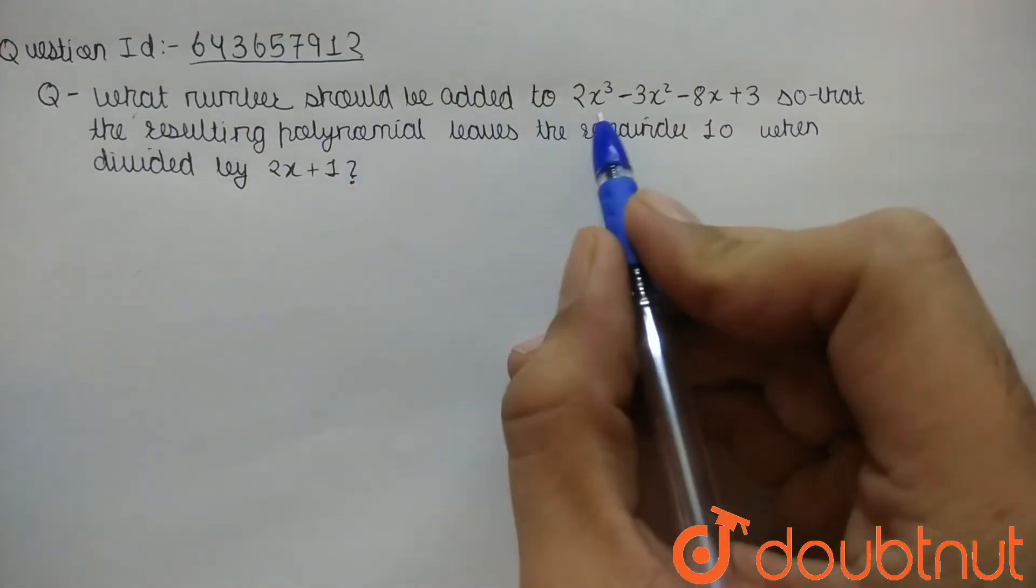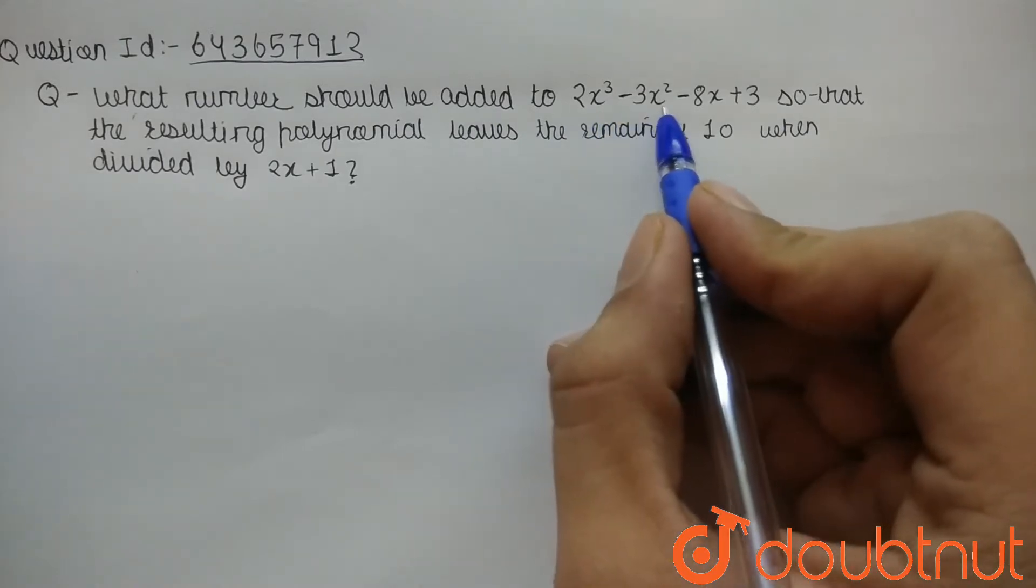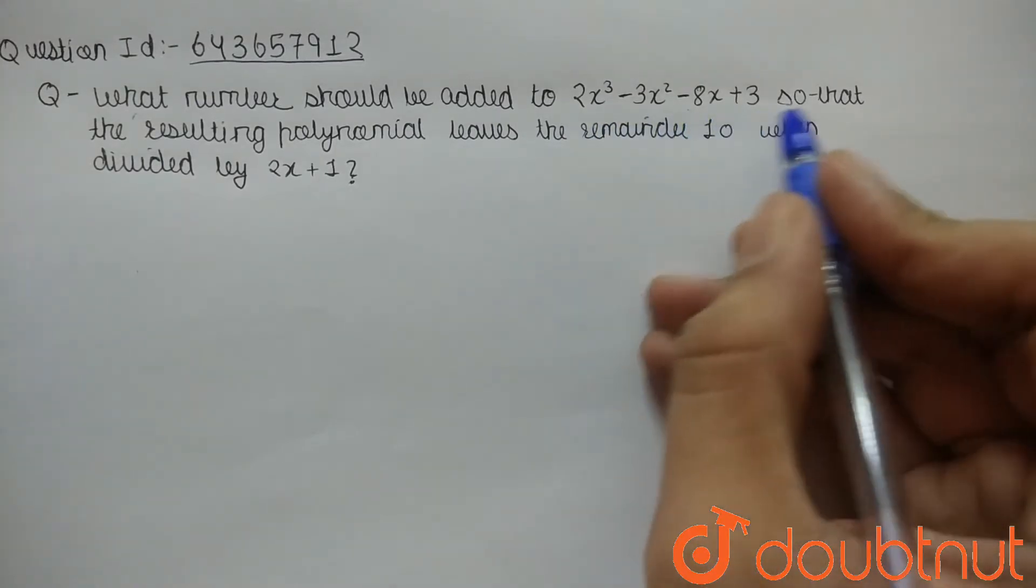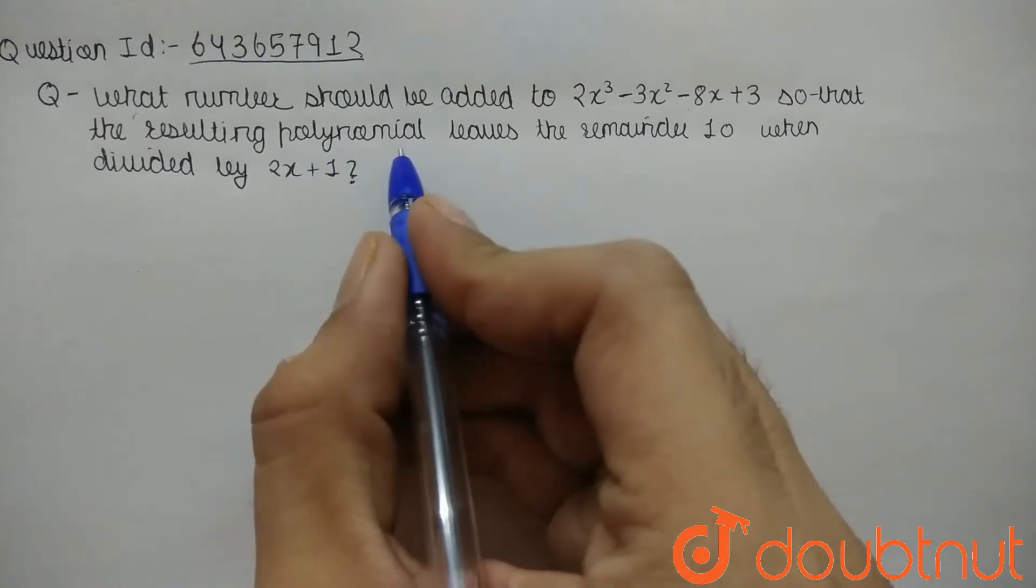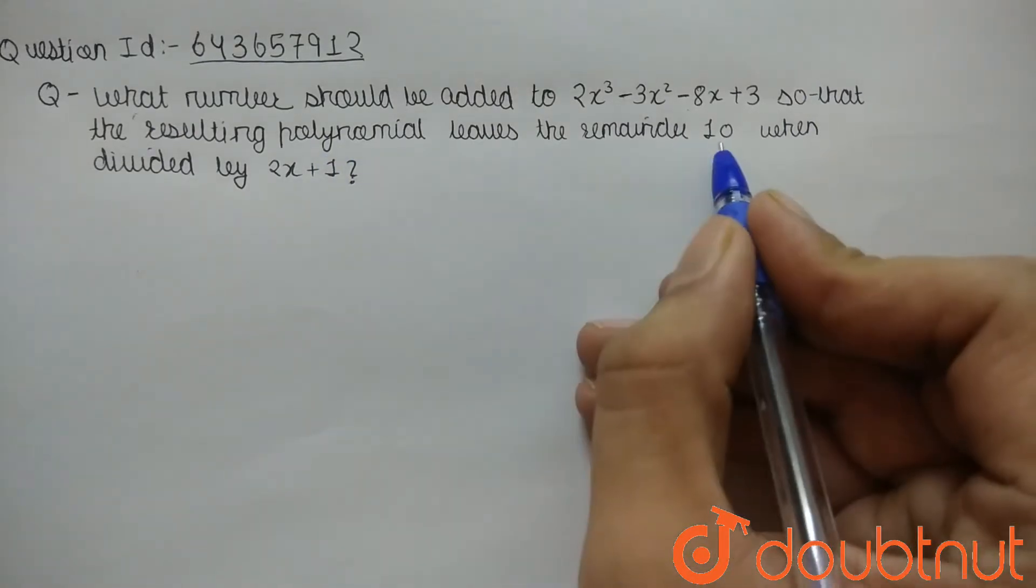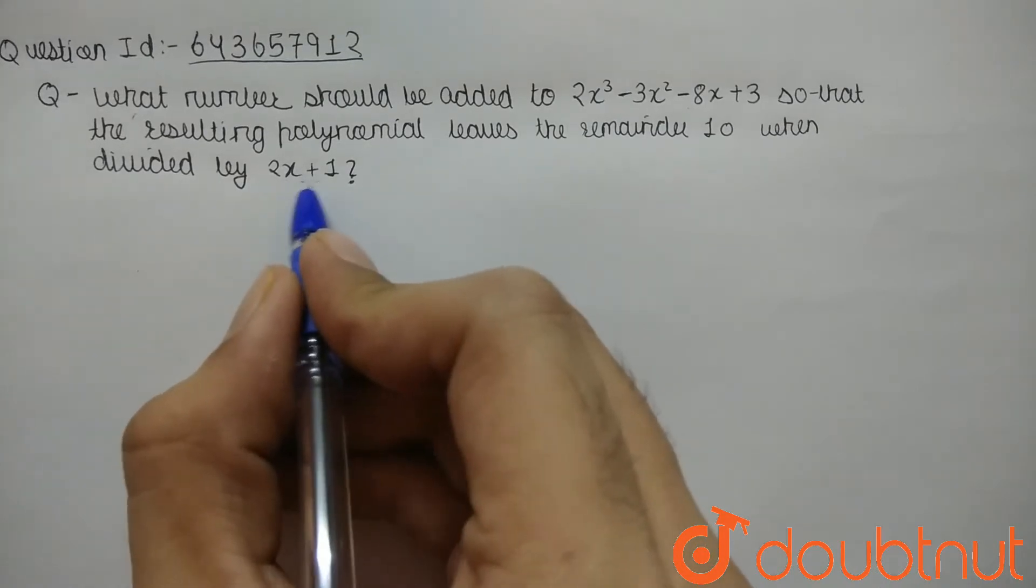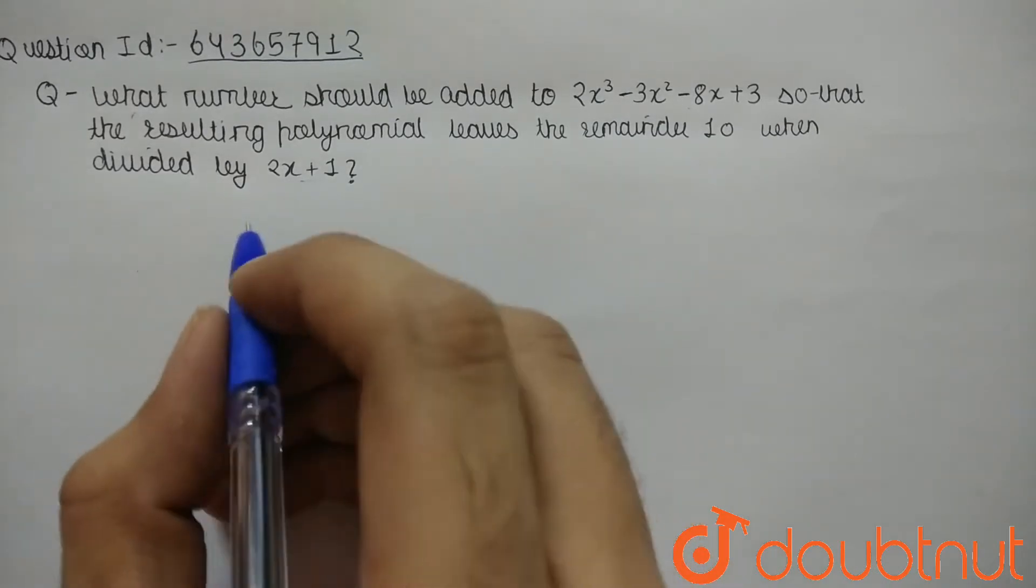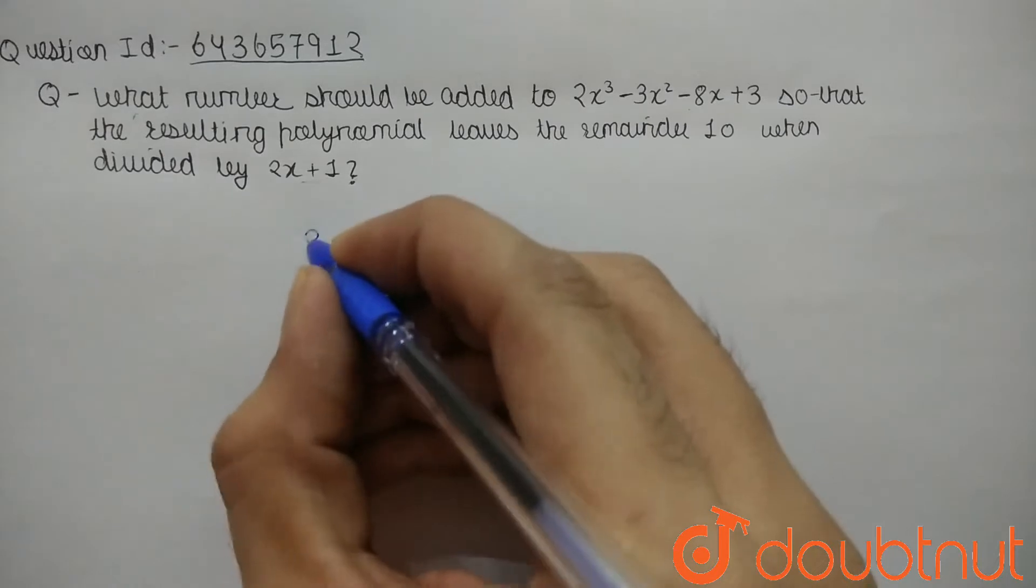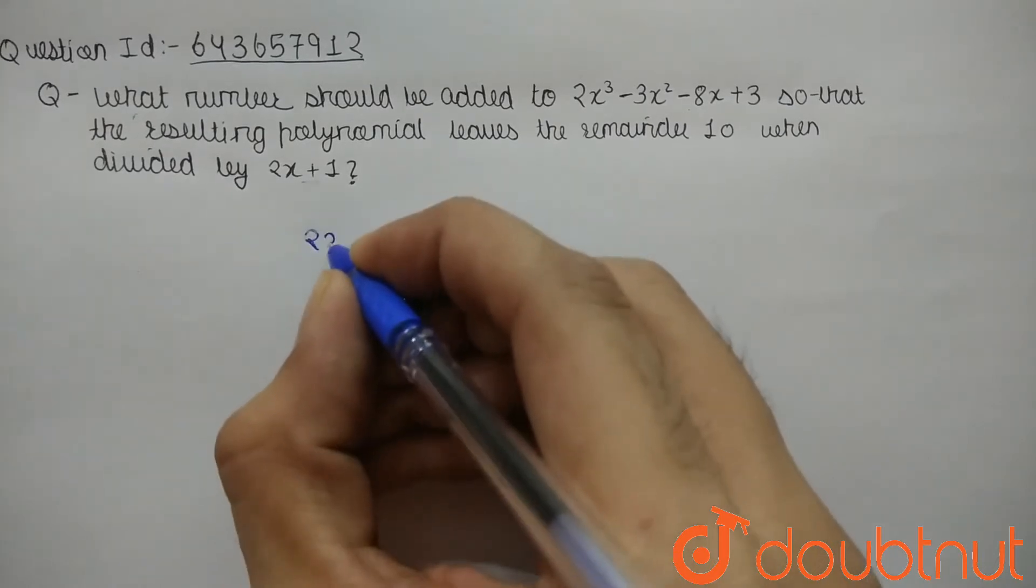should be added to 2x³ - 3x² - 8x + 3 so that the resulting polynomial leaves the remainder 10 when divided by 2x + 1? So let's check what is the remainder coming while we divide 2x³ - 3x² - 8x + 3 by 2x + 1.